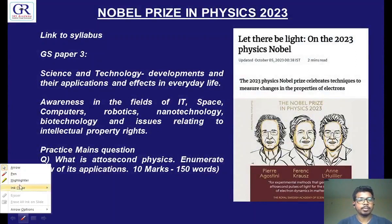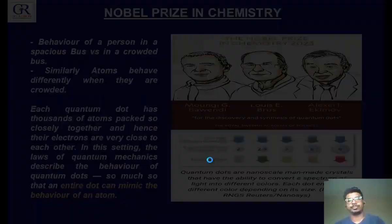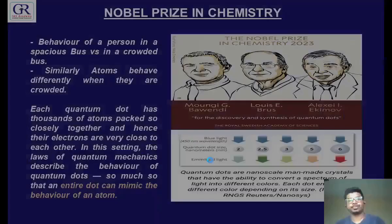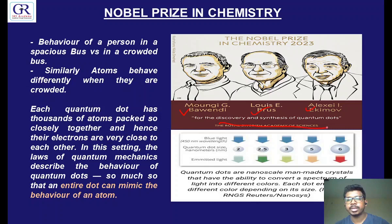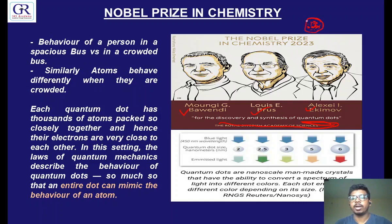The Nobel Prize in chemistry was given to three persons — Dr. Bawendi, Dr. Brus, and Dr. Ekimov — who shared the Nobel Prize in chemistry in 2023 for the discovery and synthesis of something called quantum dots. What is a quantum dot? Quantum dots are nothing but artificial atoms. What is an artificial atom? It is not a natural atom — it is a group of thousands of atoms grouped very closely together. When you do that, they all behave like a single atom. That is called a quantum dot. A quantum dot is an artificial atom of nanoscale size. Nano is 10 to the power of minus 9.